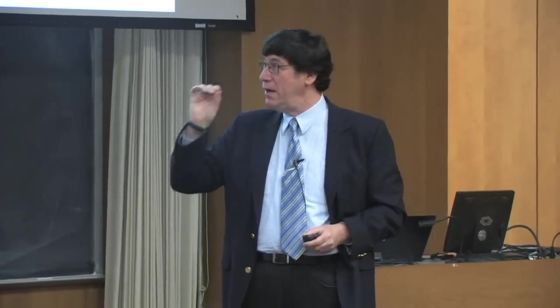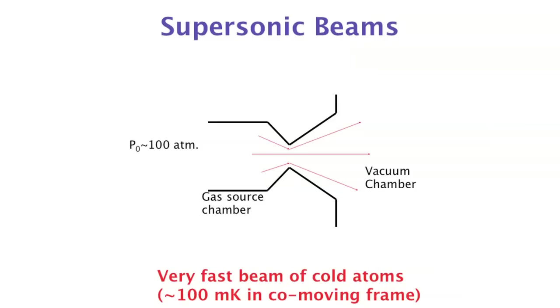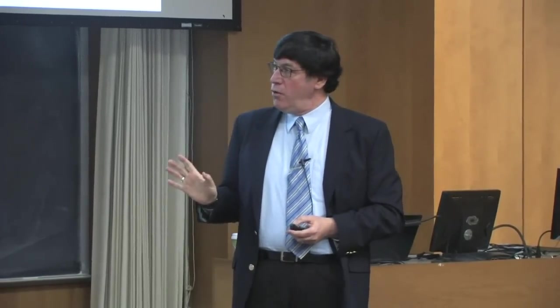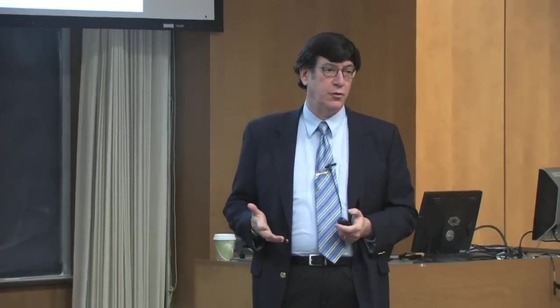Chemists have known for a long time that you can make a very monoenergetic beam of atoms or molecules — called a supersonic beam or molecular beam. It's a source of very high pressure gas emitted through a small hole into vacuum. Physicists would call that a vacuum leak, but chemists open this with a pulsed valve. During the very dense cloud expansion, atoms cool into one moving frame — tens to hundreds of millikelvin in that co-moving frame.